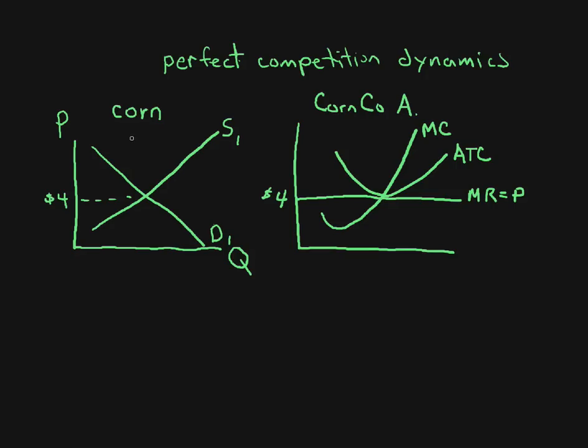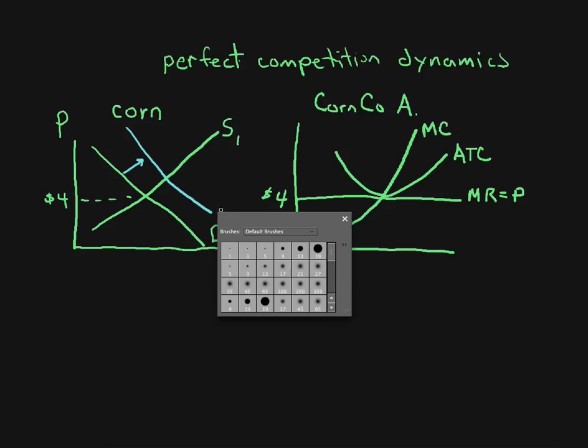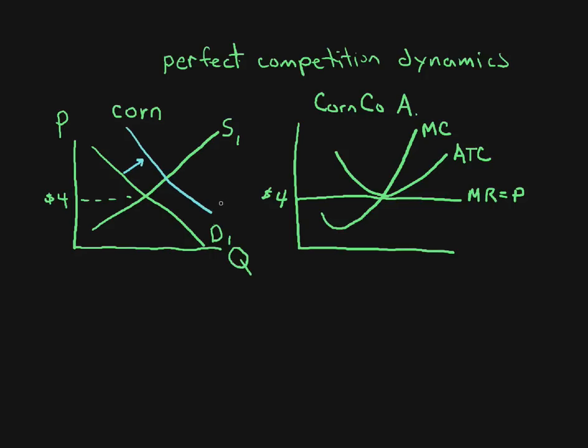Now, let's see what happens when something changes. For example, let's say corn becomes more popular and the demand for corn shifts to the right like that. We get D2. What does that mean in this corn market? Well, that means the price of corn goes up to $6. Simple enough.